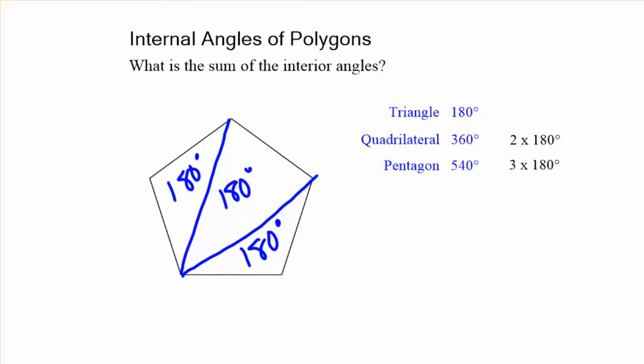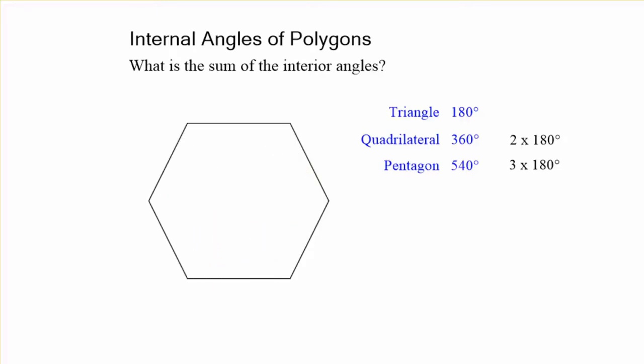And I'm starting to notice a pattern. Four gives us two triangles, five gives us three. Let's try a hexagon, a six-sided figure. And I'll draw my lines nice and straight from that one vertex.